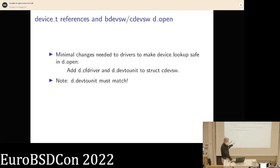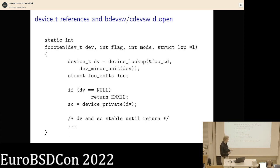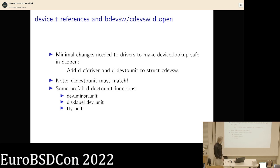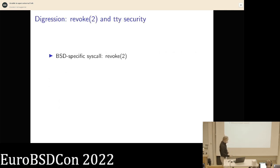You just add the dcf_driver and ddevt_unit to the struct cdevsw tables — devt_unit must match whatever you use to map a major/minor number to an autoconf instance. There are a few built-in devt_unit functions: for many devices the autoconf instance number is just the minor number; for disks with disk label partitions it's more complicated with the partition number; for TTYs, there's one bit for dial-out versus non-dial-out.